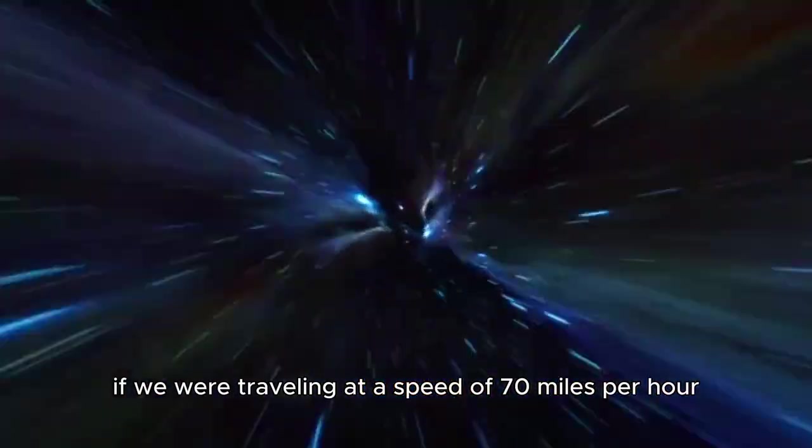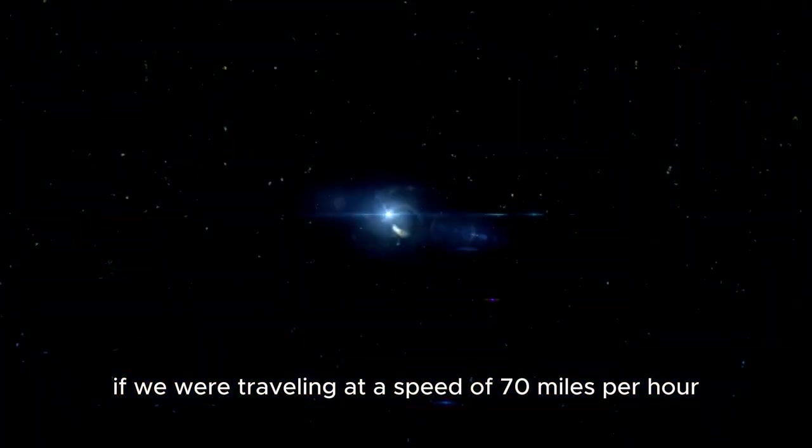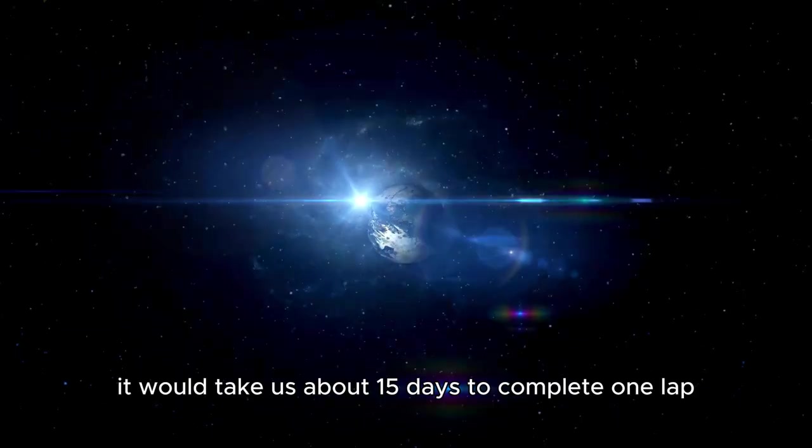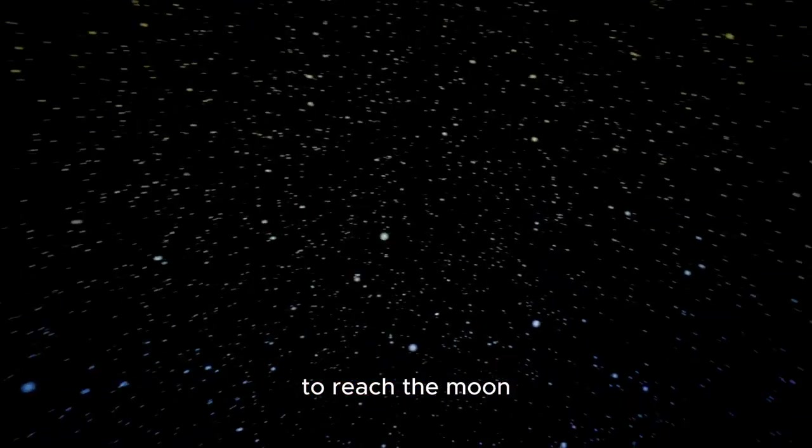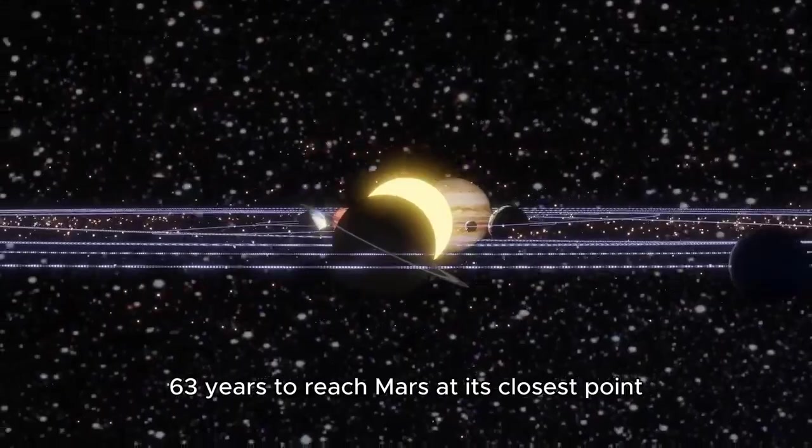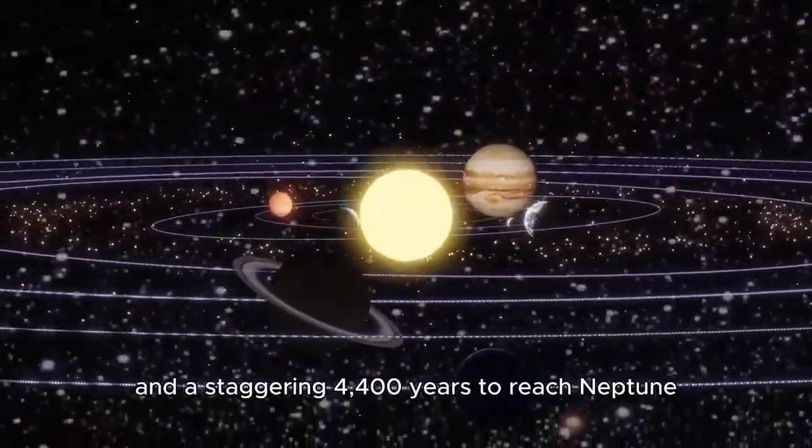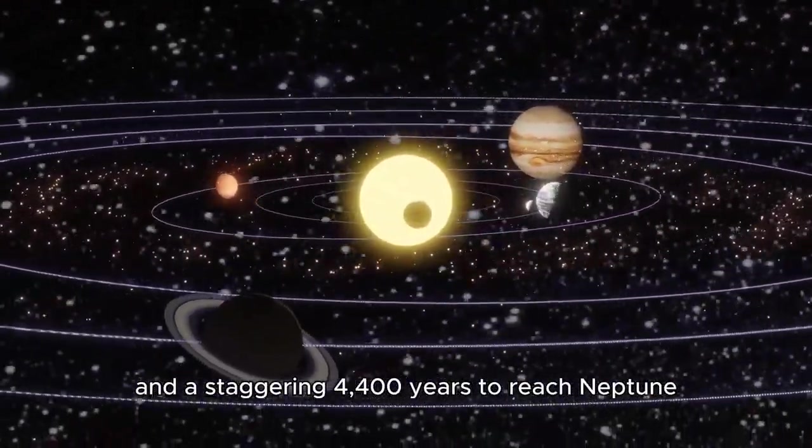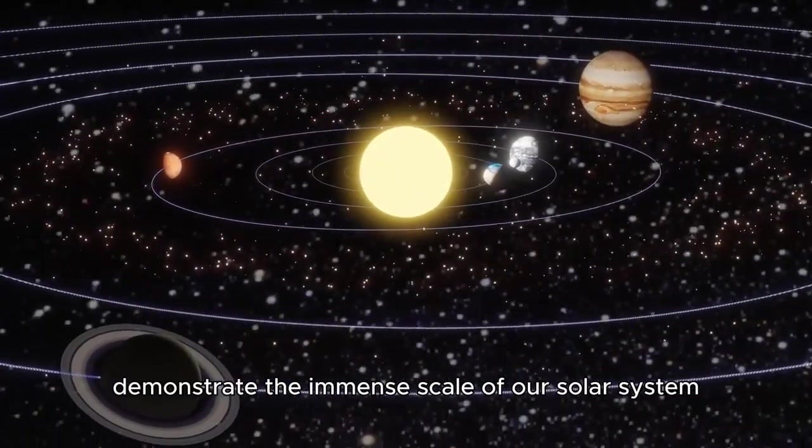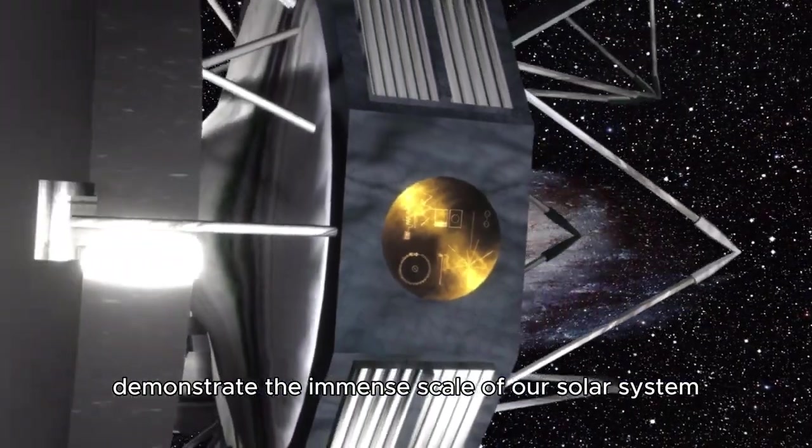If we were traveling at a speed of 70 miles per hour, it would take us about 15 days to complete one lap around the Earth's equator. It would take approximately 5 months to reach the Moon, 63 years to reach Mars at its closest point, and a staggering 4,400 years to reach Neptune.